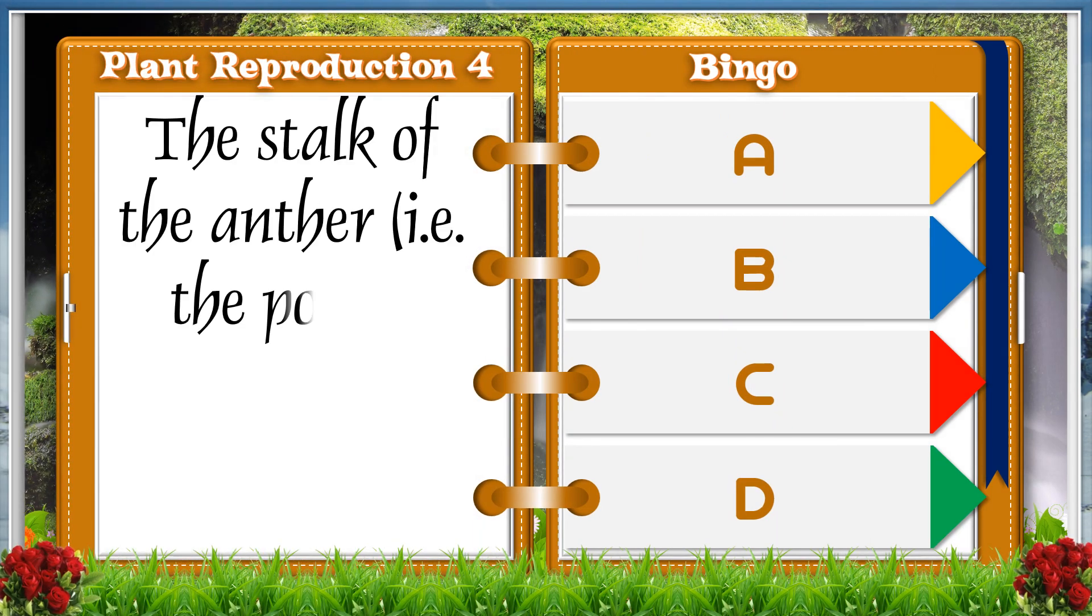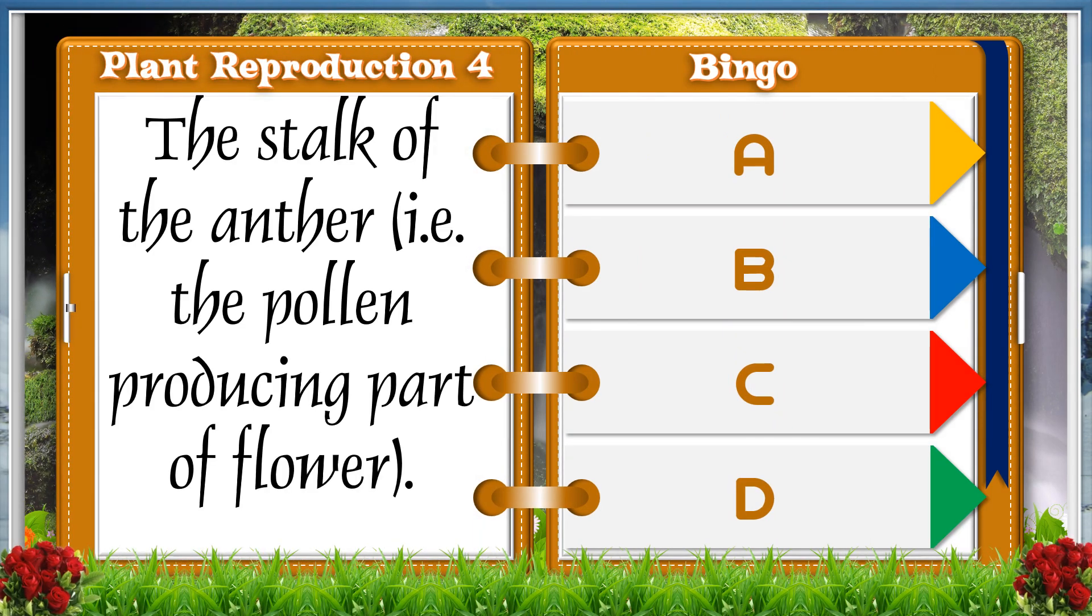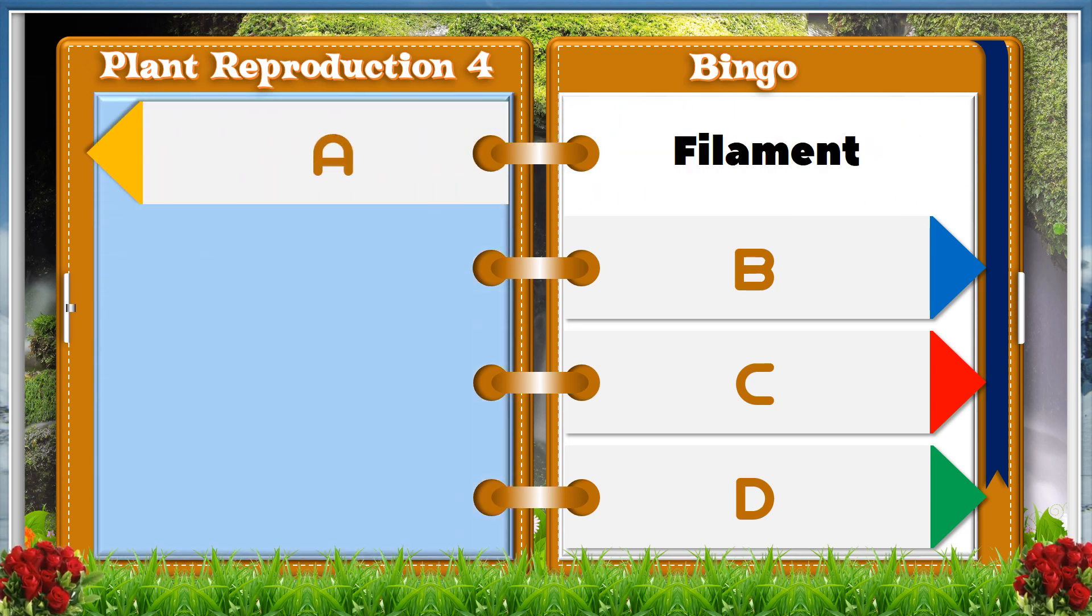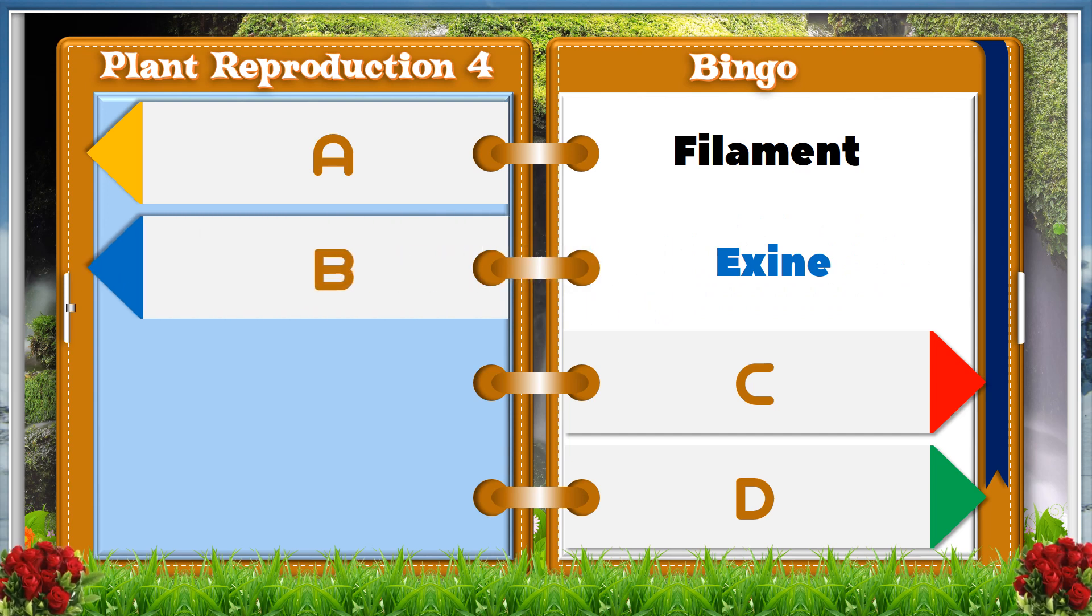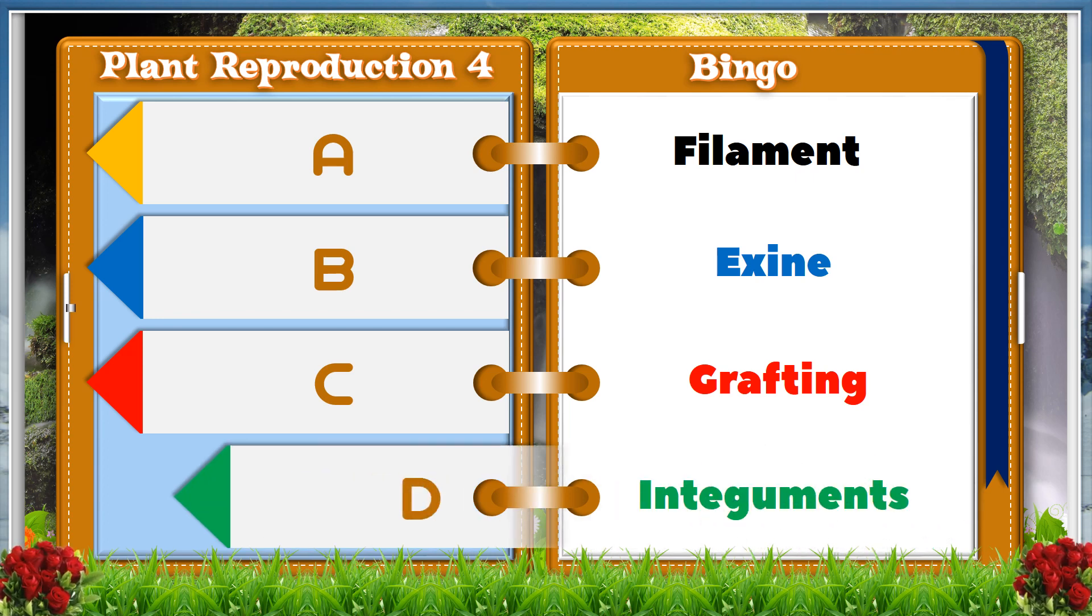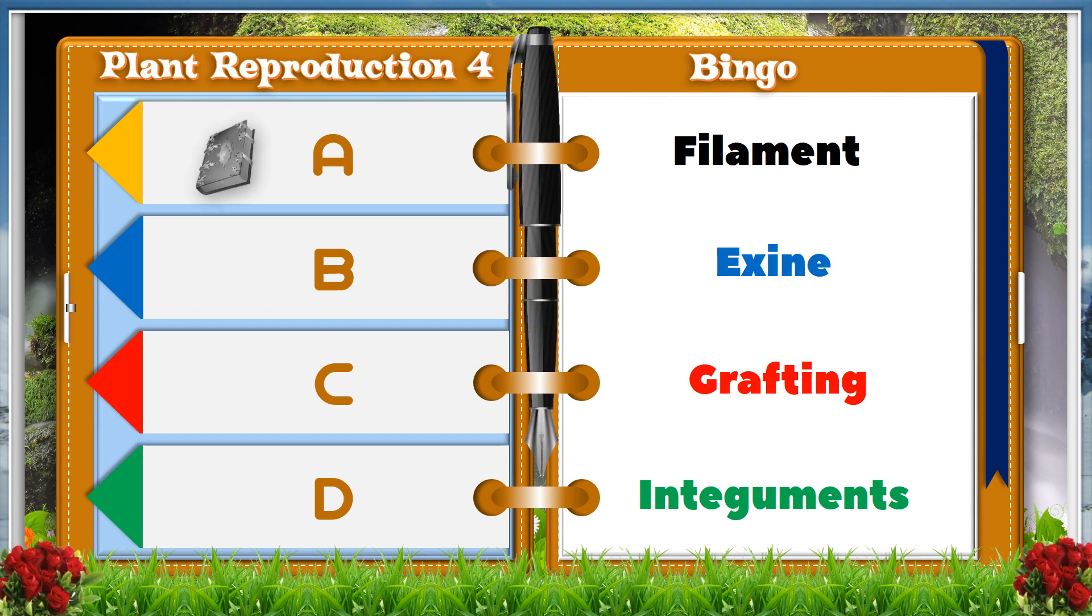The stalk of the anther, i.e., the pollen producing part of flower. A. Filament. B. Exine. C. Grafting. D. Integument. And the answer is A, Filament.